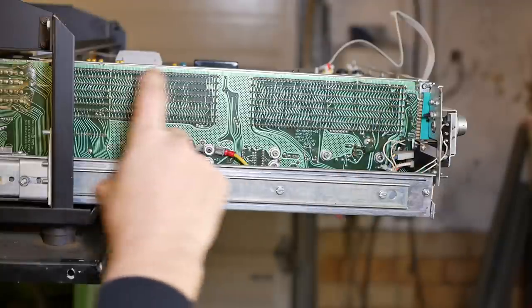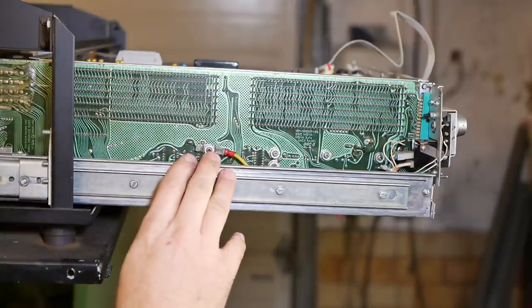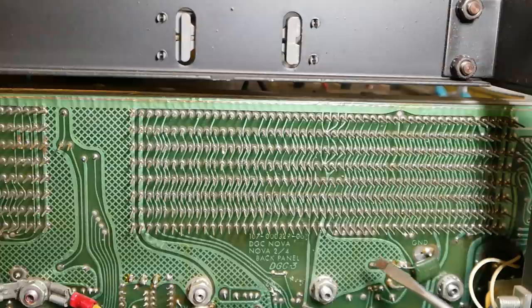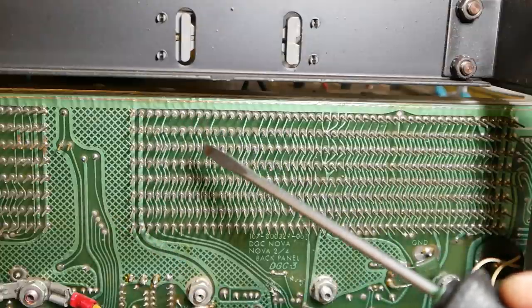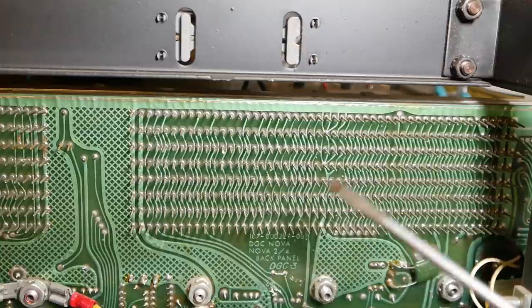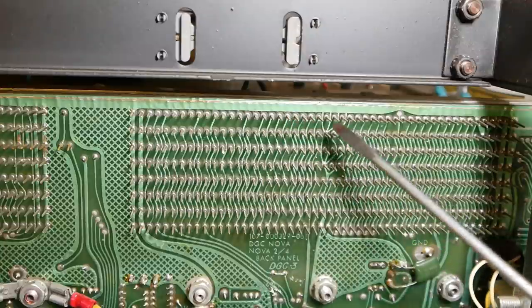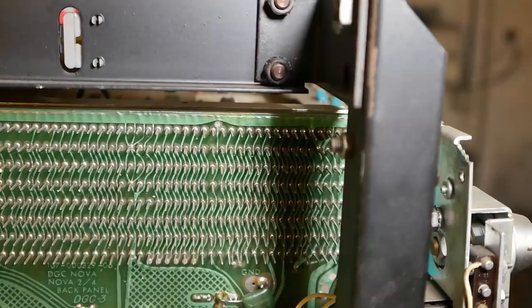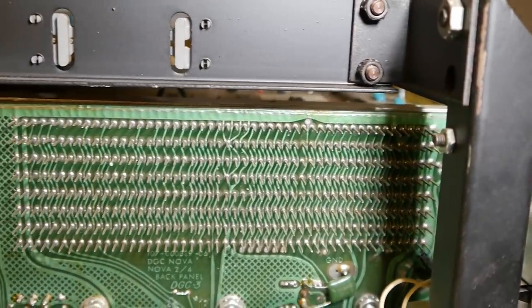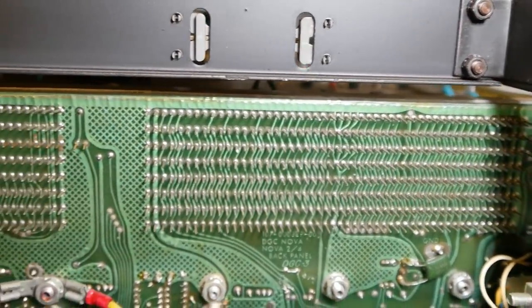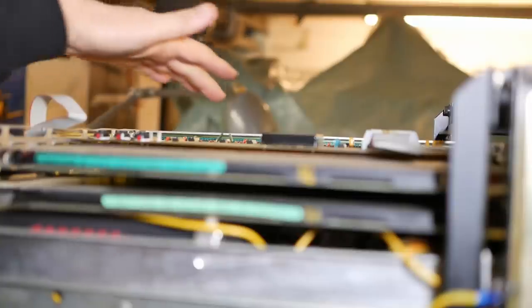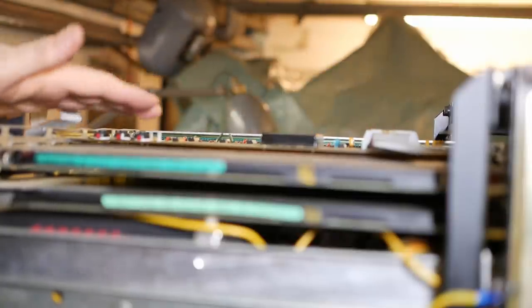So what we're looking at here is the backplane board of the Nova mini computer. Although the printed circuit board had pretty much won the day by this stage, there were obviously still diehards at Data General who kept the option of wire wrap pins available. So this is basically an expansion board across here.